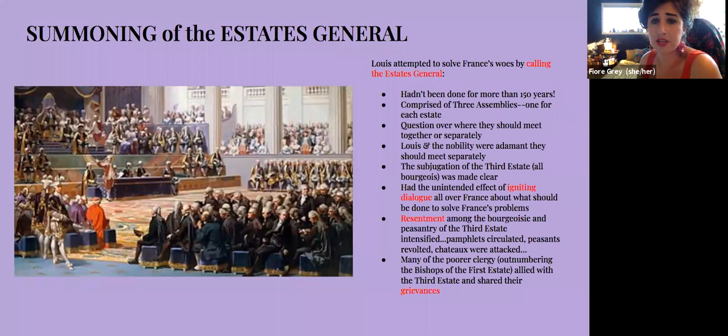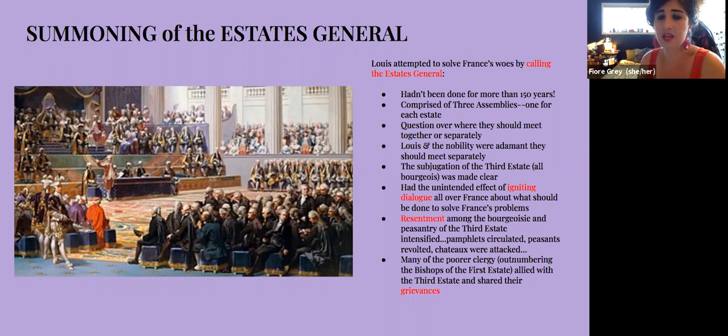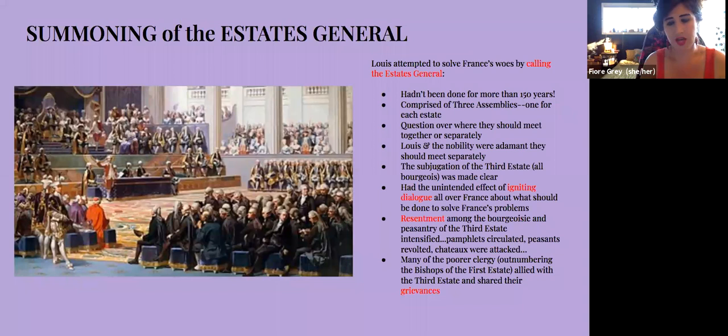The king summoned the Estates General in an attempt to resolve these woes — something that hadn't been done for more than 150 years. The Estates General was comprised of three assemblies, one from each estate, and there were questions over whether they should meet separately or together. Louis and the nobility adamantly wanted them to stay separate. The subjugation of the third estate was made clear, which had the unintended effect of igniting dialogue all over France about what should be done, and resentment among the bourgeoisie and peasantry intensified.